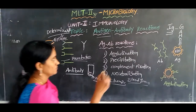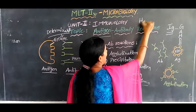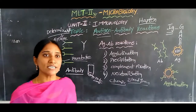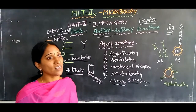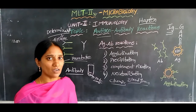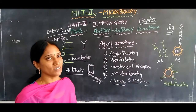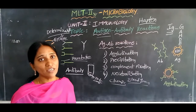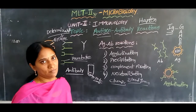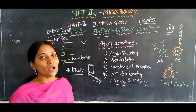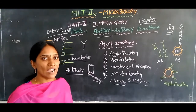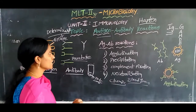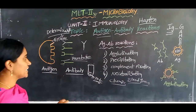Hapten means an incomplete antigen. A hapten can combine with antibody but does not produce an immune response on its own. However, when it combines with a carrier molecule, it can produce immunity. So hapten is an incomplete antigen that provides immunity only when combined with a carrier.